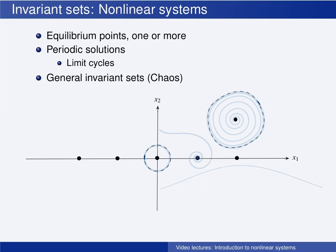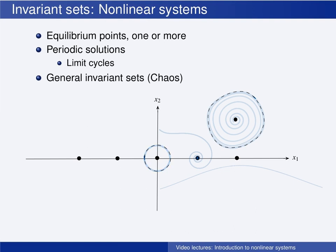Which behavior the nonlinear system displays depends on the initial condition. If the system starts here, it will oscillate with larger and larger amplitude until it reaches the limit cycle, at which it will stay for all future time. If it starts here, it will immediately oscillate with an amplitude given by the initial condition. If it starts over here, it will converge to this equilibrium point. And if it starts over here, the value of state x1 will grow unbounded. An important takeaway is that which dynamic behavior you get depends on the initial condition — something completely new compared to linear systems, where the qualitative behavior was independent of the initial condition.